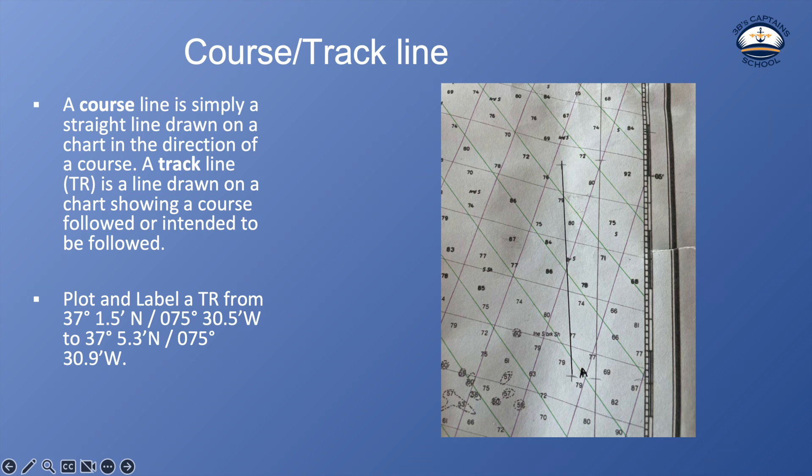So what we want to do here is plot and label a track line from 37 degrees 1.5 minutes north, 75 degrees 30.5 minutes west, to 37 degrees 5.3 minutes north, 75 degrees 30.9 minutes west. And then this here is an example of a basic track line.